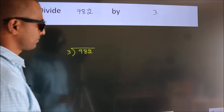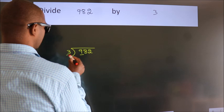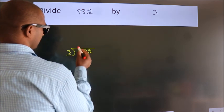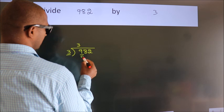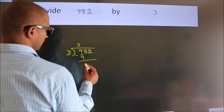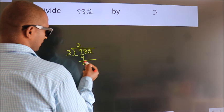Next, here we have 9, here 3. When do we get 9? In 3 table. 3 times 3 is 9. Now we should subtract. We get 0.